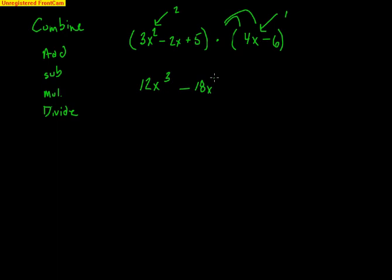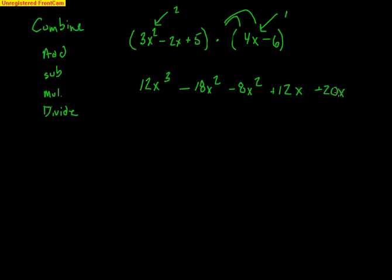Then I've got to distribute the negative 2, so that's negative 8x squared and a positive 12x. Just take your time, write it all out. 5 times 4x is 20x, and then 5 times negative 6 is negative 30.